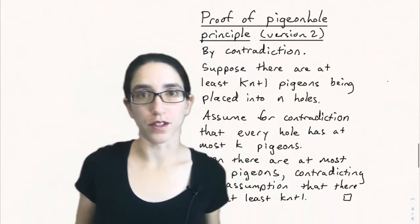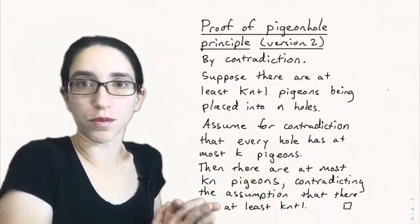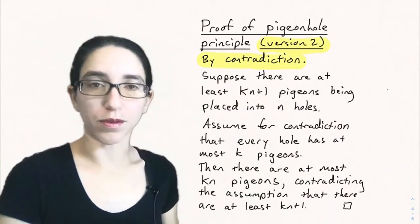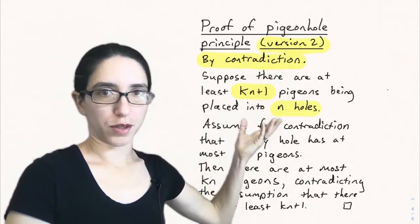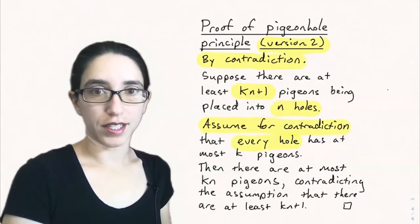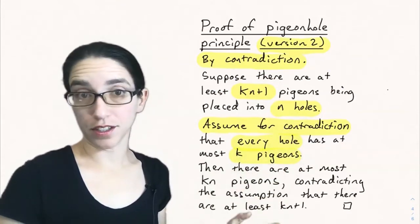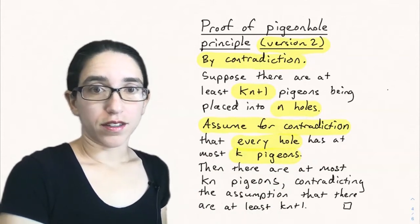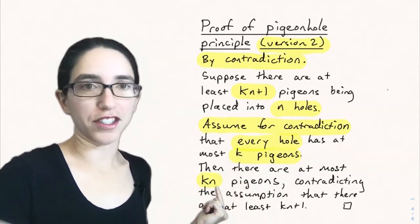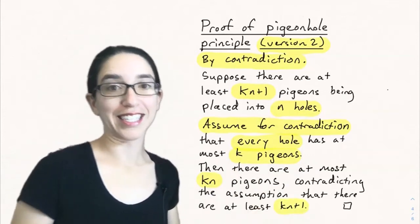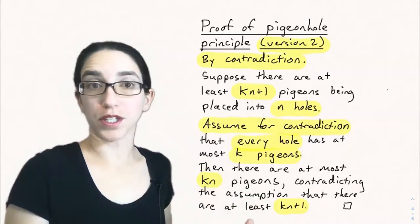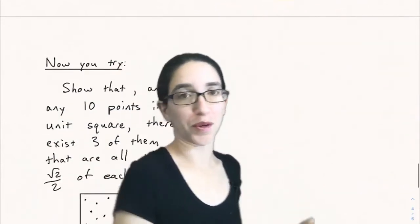Let's wrap up with a proof of the pigeonhole principle. We'll prove version two, from which version one follows as a special case, and this is a good example of proof by contradiction. Assume for contradiction that every hole has at most k pigeons. Then by counting, there are at most k times n pigeons total across all n holes. But this contradicts the assumption that there are at least kn plus one pigeons. It's a fairly simple proof by contradiction using basic counting, but the principle is very useful and we don't want to repeat this argument every time we use it.